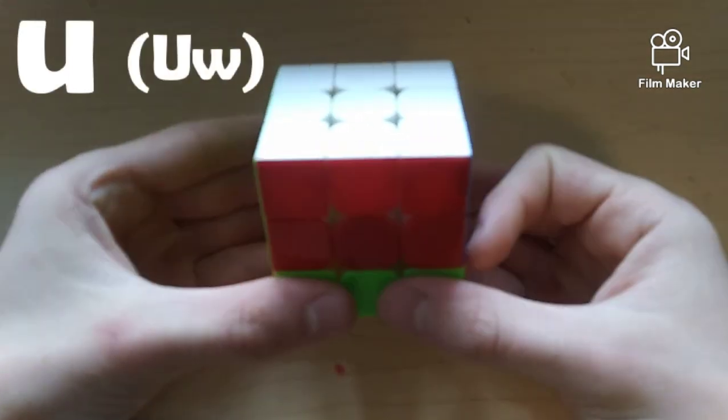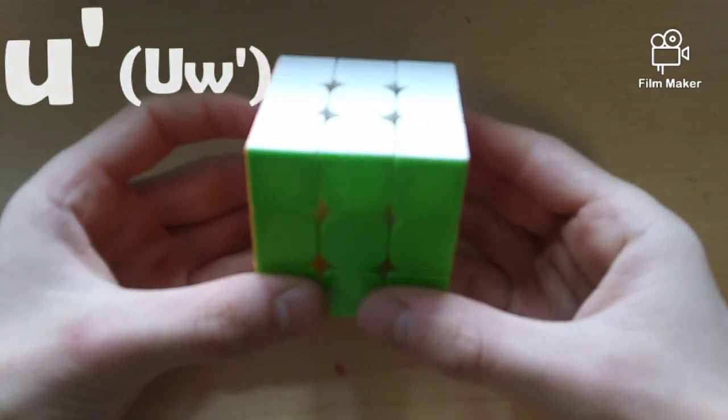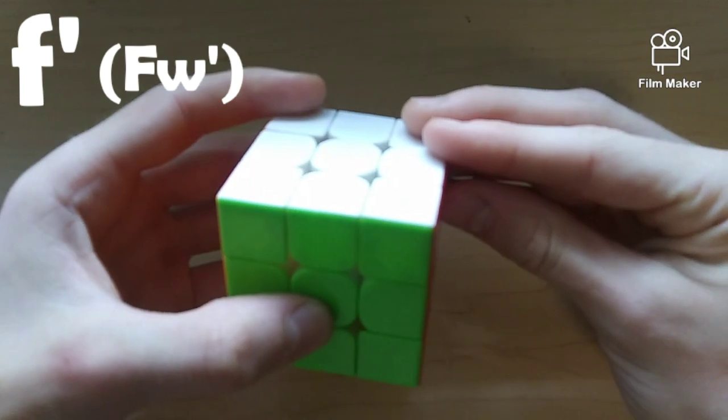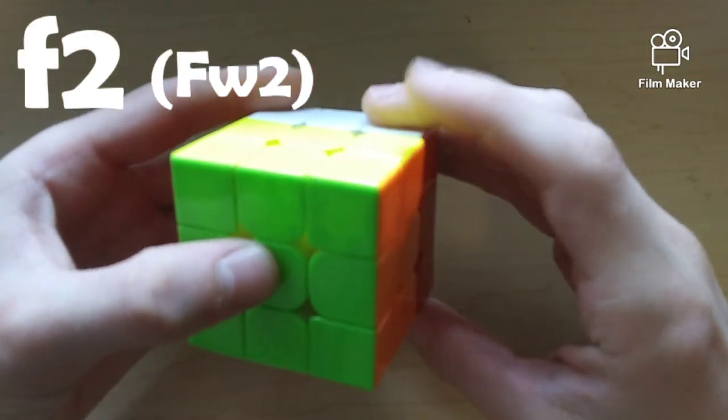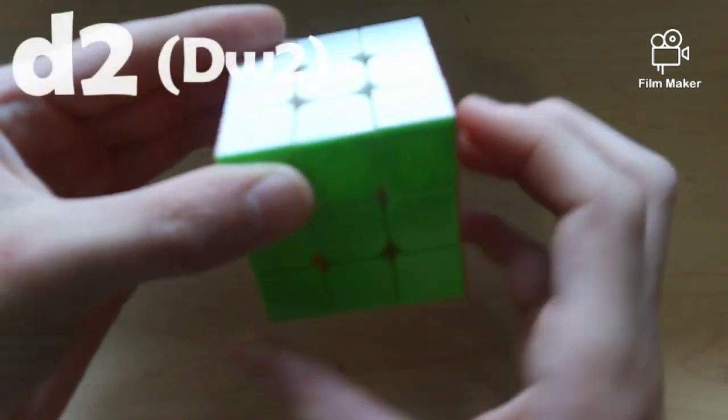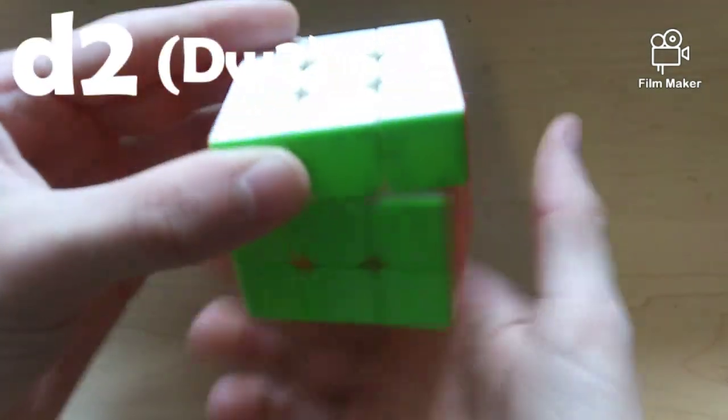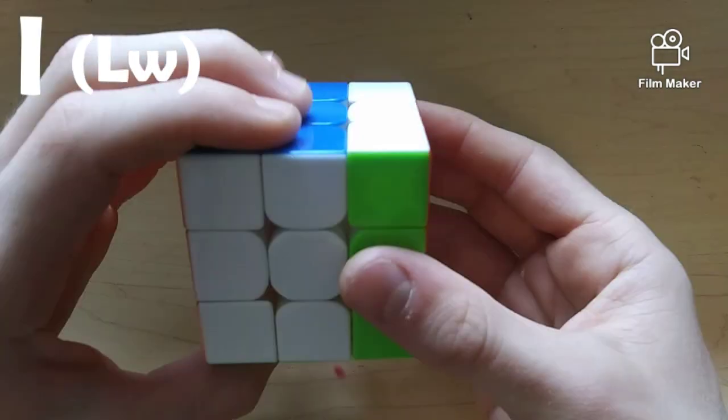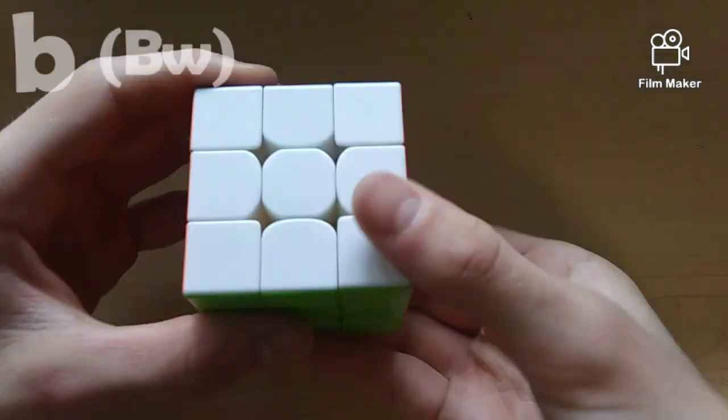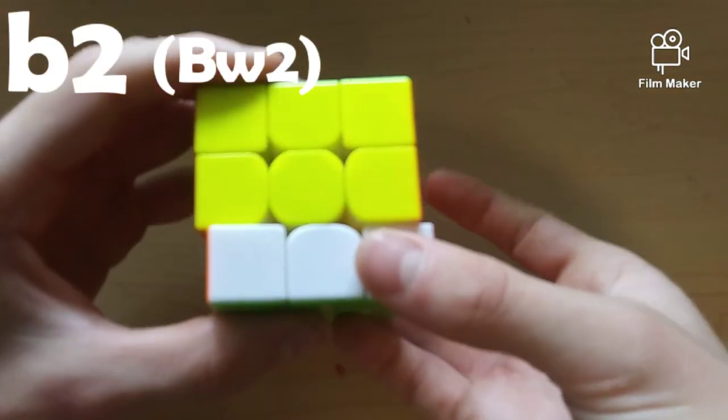Little u, little u', little u2. Little f, little f', little f2. Little d, little d', little d2. Little l, little l', little l2. And, little b, little b', little b2.